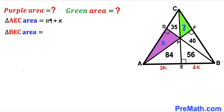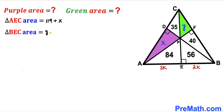Now let's focus on the other right triangle BEC. The total area of that big right triangle is y plus 40 plus 56. Combining like terms, the area of triangle BEC is y plus 96.